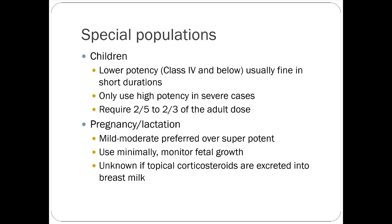For children, there is generally a higher risk for systemic side effects from these drugs. You usually stick with pretty low-potency — class four or below — and use short durations. In a really severe case you could consider a higher-potency one with special judgment, but the dose is typically two-fifths to two-thirds of the adult dose. Make sure the parent or older child understands how much to use, and consider going with a slightly lower percentage product.